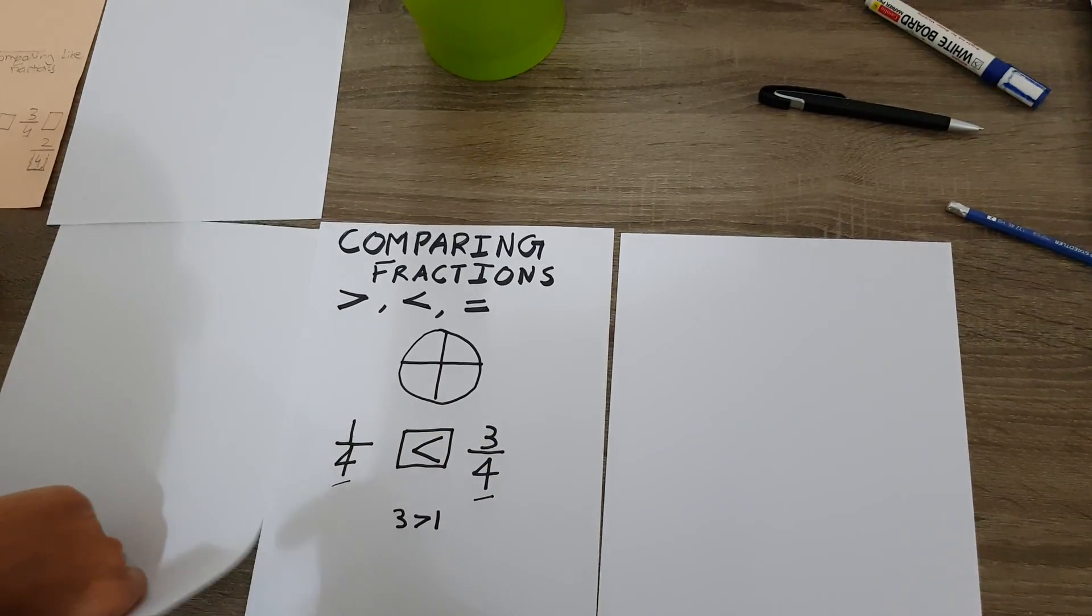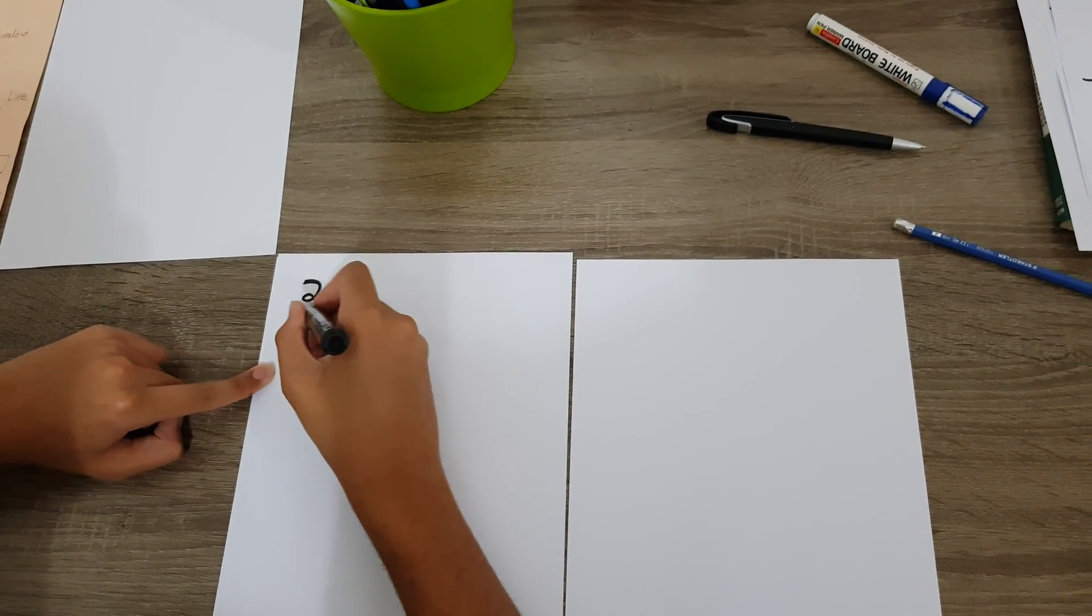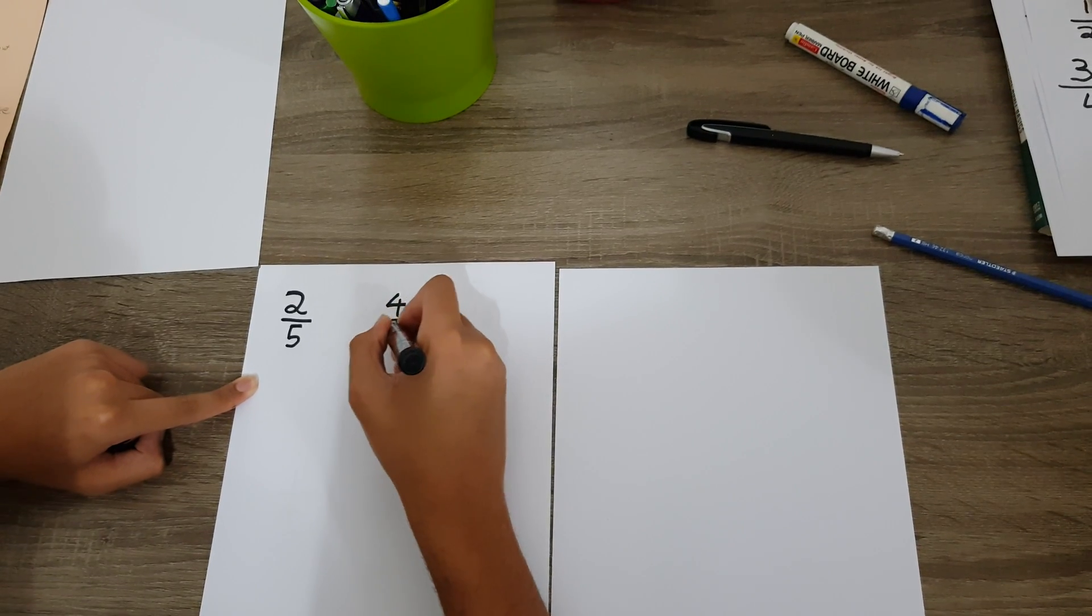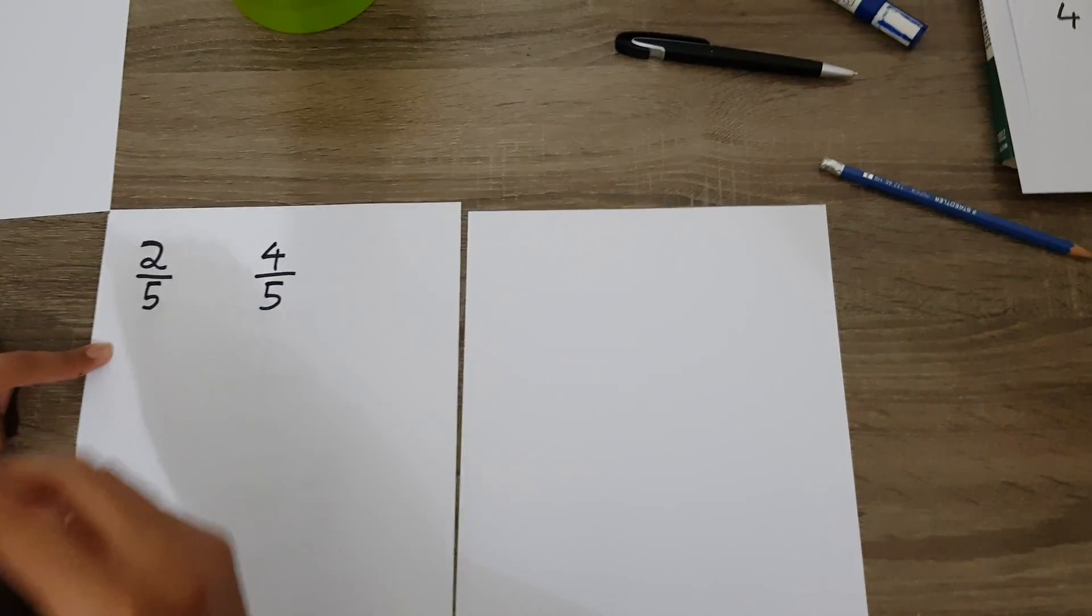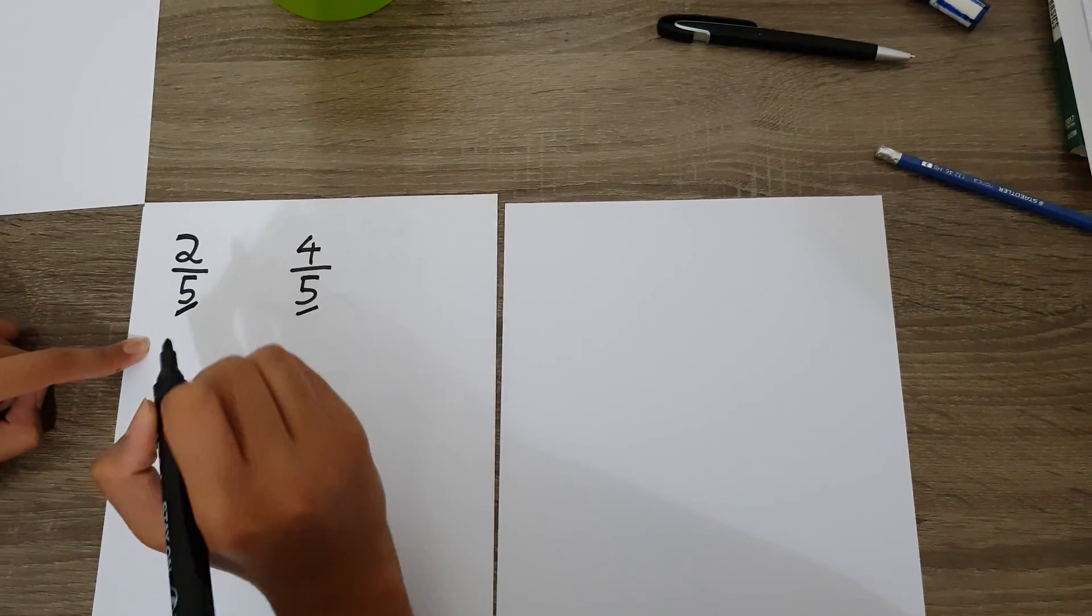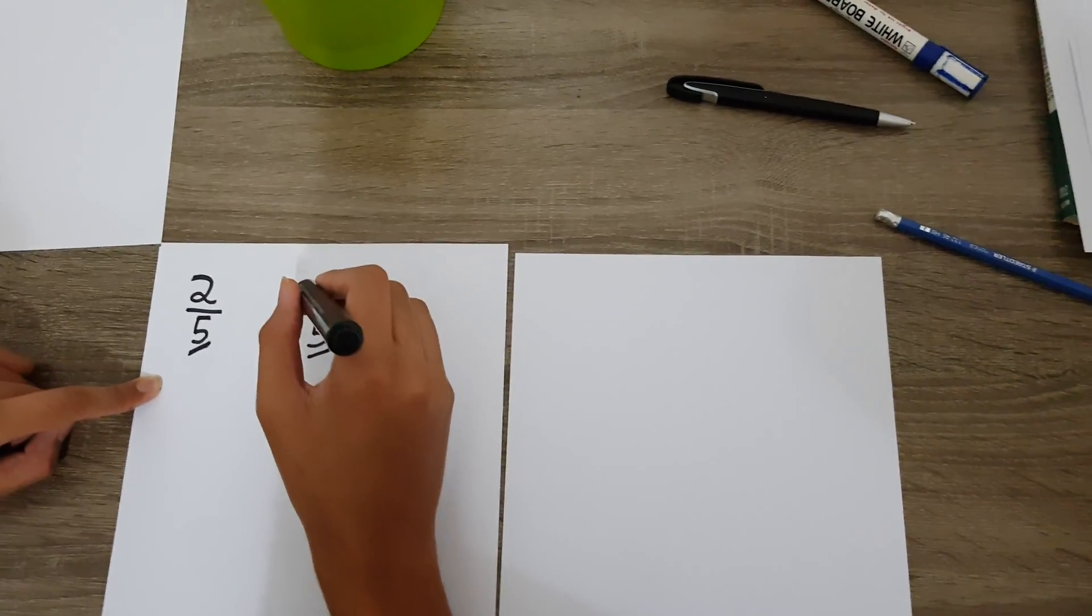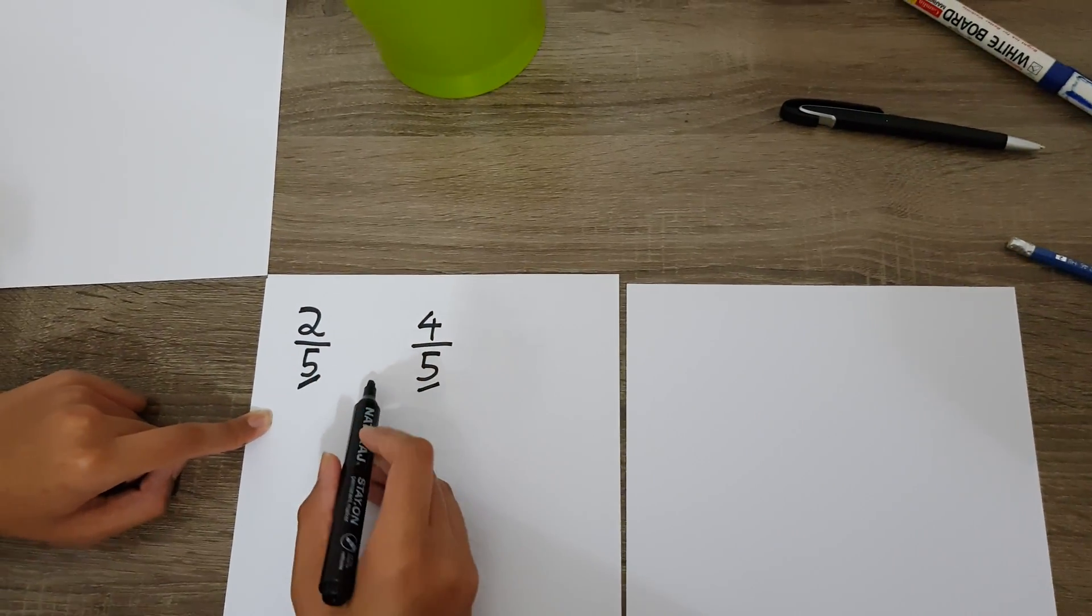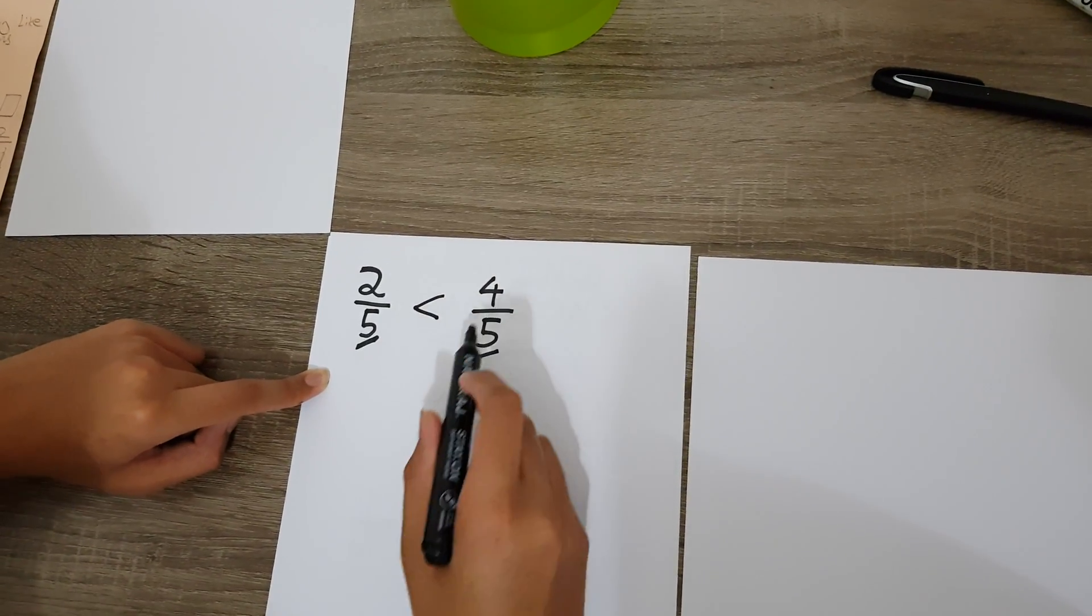Let's work some problems. Suppose you have two over five and four over five. First we're going to go through the steps. We check the denominator—five and five are the same. Now we move to the numerator. We need to check which numerator is bigger. Four is definitely bigger than two, so we put the less than sign: two over five is less than four over five.